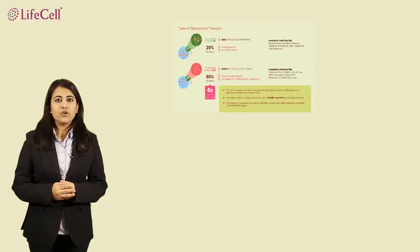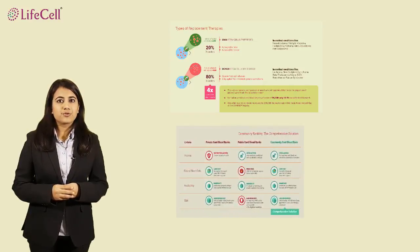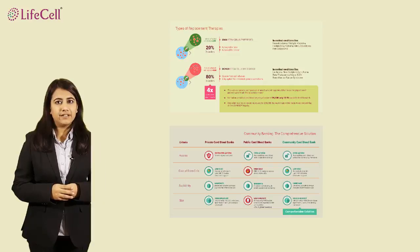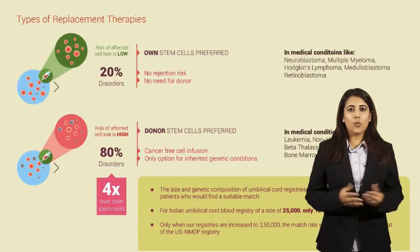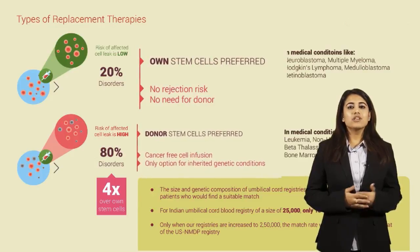Our previous video covered what stem cells are and how they are applied in treatments. This video provides information on when you require your own stem cells and when from another donor. This shall help you choose the right type of stem cell banking for your family. Replacement therapies are of two types: one, the patient's own stem cells, and two, stem cells from a donor.